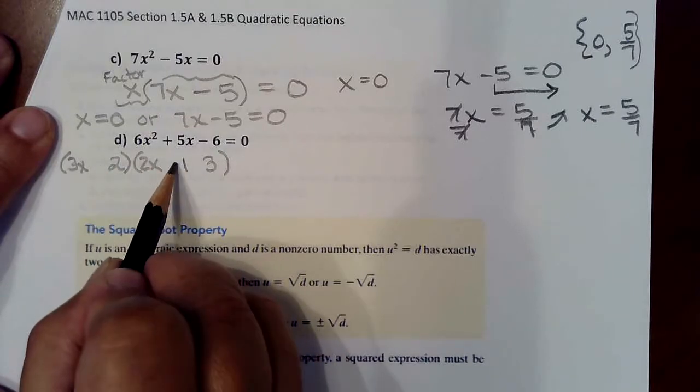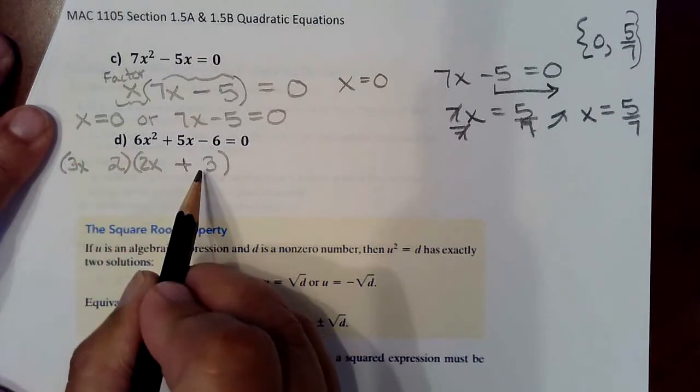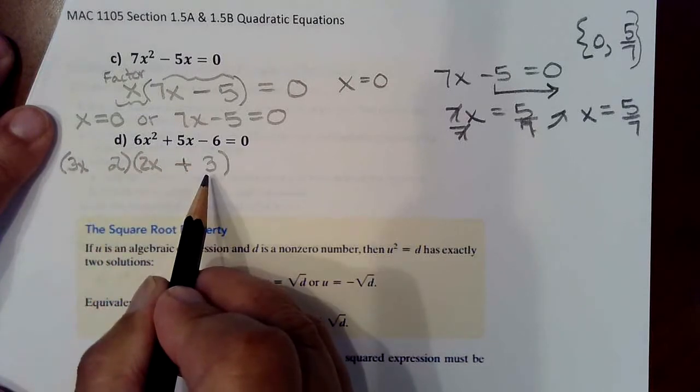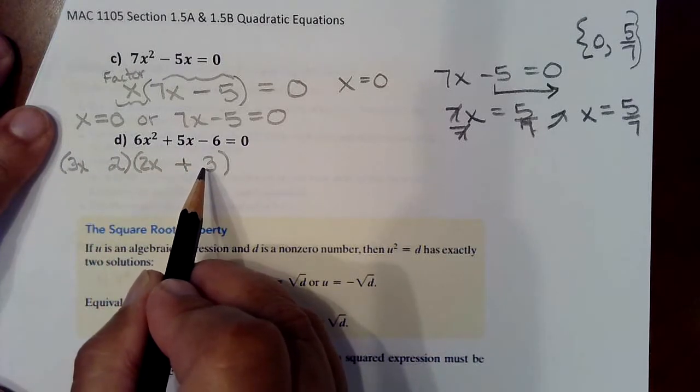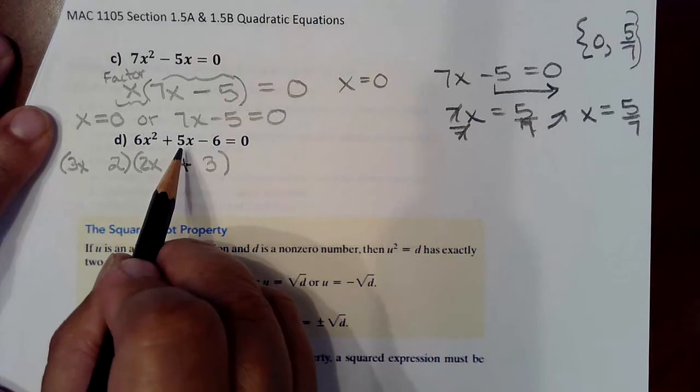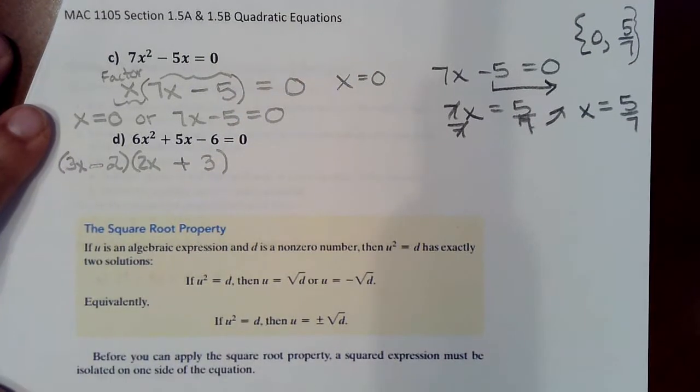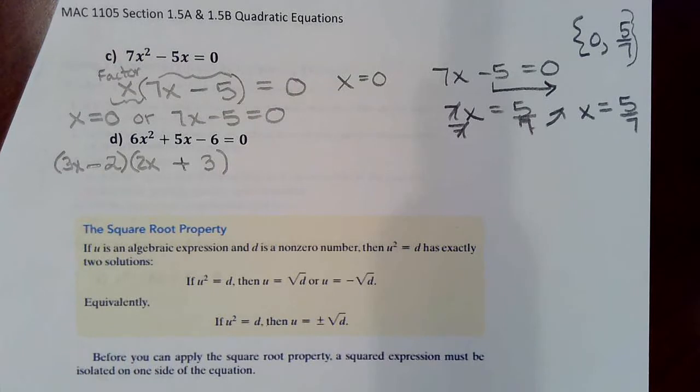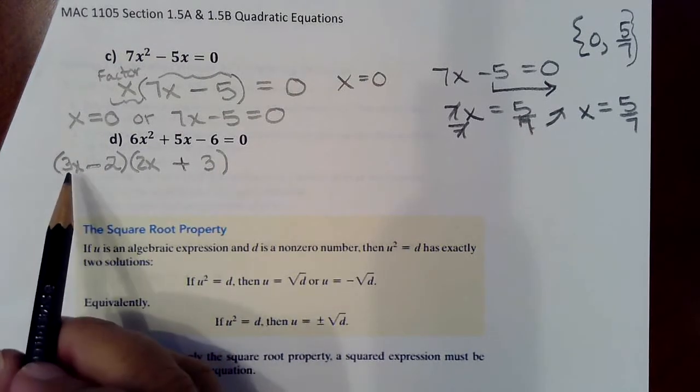I know that if I make this a positive 3, part of what I do when I foil will give me a 9X, but then I need this middle term to come back down to 5X. So I could make this a negative. That's what brings a number down from what's being created through the foiling process. So let's check this out.